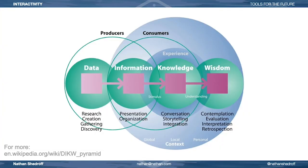Understanding is a spectrum — one that starts with data at one end, which is raw, and progresses to more and more complex constructions that build upon each other. All of this is understanding, but at different levels of detail. We don't know who first proposed this relationship; there are references to it from the 1930s, and more concrete descriptions were discussed from many sources throughout the 1950s.